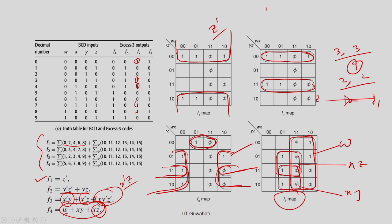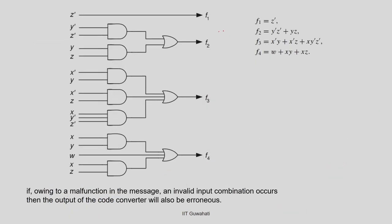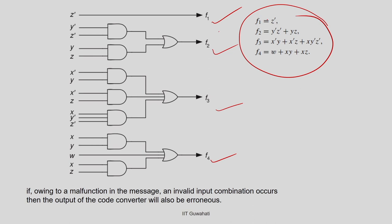You can see here that for F4 all don't cares get used, while for F1, F2, F3 only some of the don't cares get used — 1, 2, 3 of them respectively — and others are not used. As per my requirement I use the don't cares to minimize my function and end up with this circuit. So F1, F2, F3, and F4 represent the BCD to XS3 code converter.